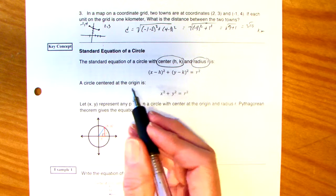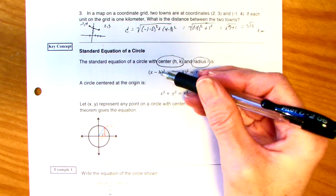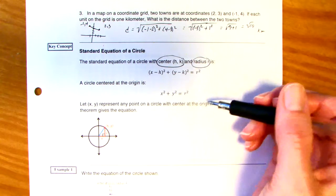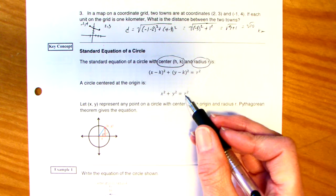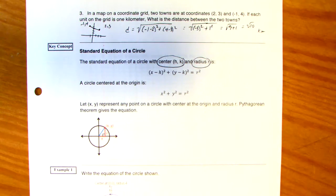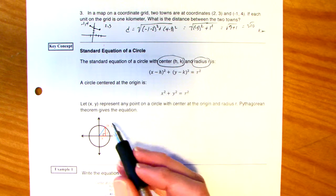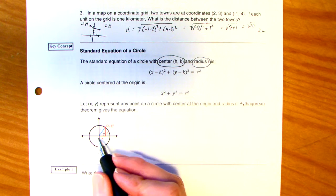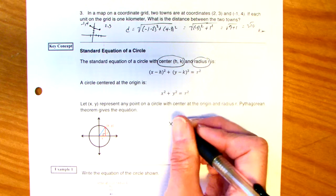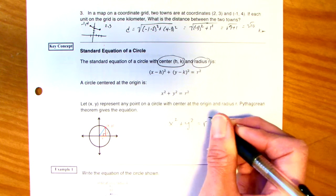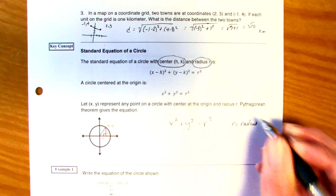Now, if it's centered at the origin, meaning at 0, 0, the center would be 0 here, 0 here. What happens? You get x squared plus y squared. So, this would be a circle at 0, 0. And it's only going to change if the radius changes. So, let x and y represent any point in a circle with the center at the origin, the radius r. Pythagorean theorem gives the equation. Look at this. x, y, r. So, Pythagorean theorem, you have x squared plus y squared is equal to r squared, where r is your radius.